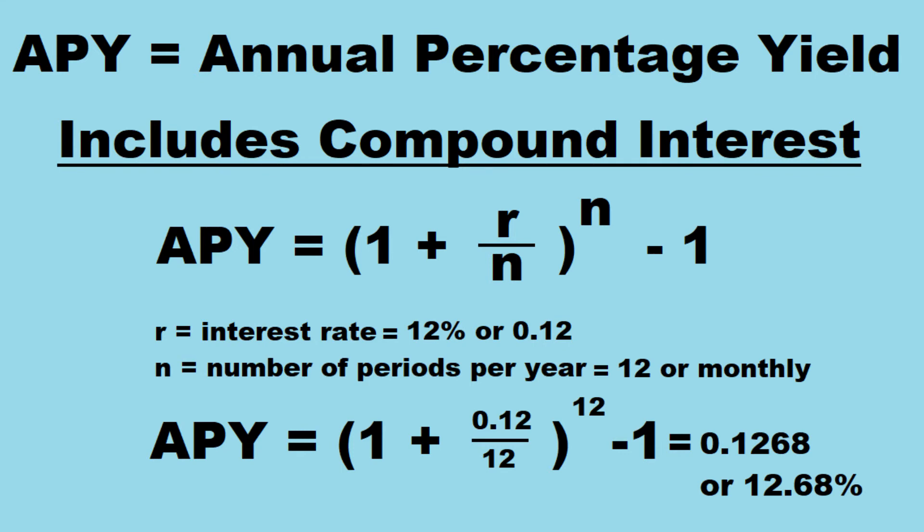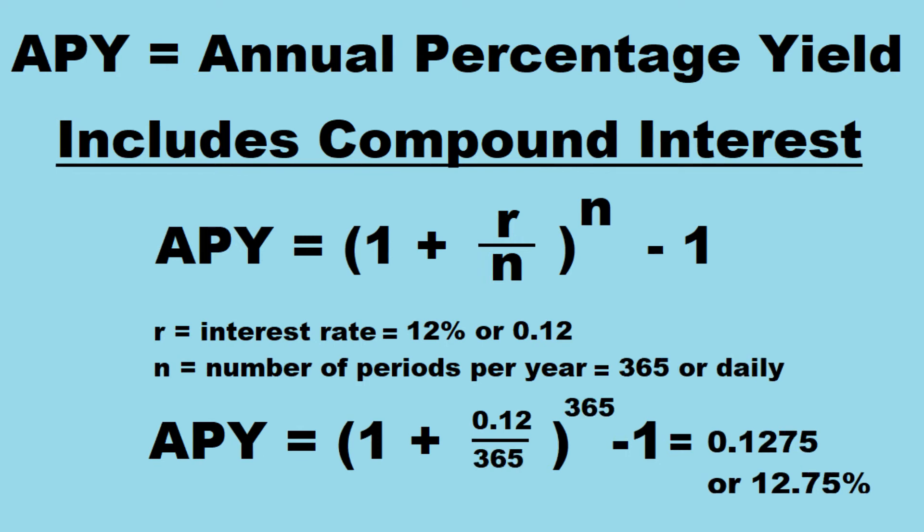What if you change the frequency of compounding? If we change the compounding to daily rather than monthly, and substitute in 365 periods — meaning it's being compounded daily — you'll find a slightly higher APY. Whereas when it was compounded monthly you had 12.68%, now you're looking at 12.75%. It doesn't sound like a huge difference, but it adds up.